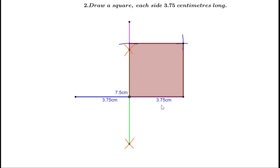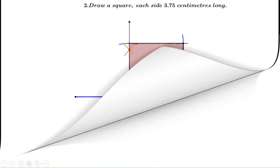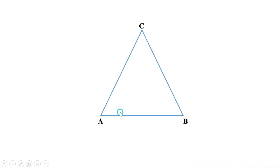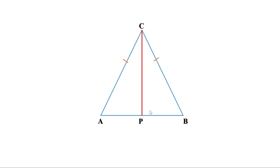In the last video, we saw how to draw the perpendicular bisector of a line. Today, we are going to learn how to draw the bisector of an angle. Consider the isosceles triangle ABC in which sides AC and BC are equal. The perpendicular bisector of AB is also the bisector of angle C. So, to draw the bisector of angle C, it is enough to draw the perpendicular bisector of the opposite side AB. To draw the bisector of any angle, we make an isosceles triangle where the angle joins the equal sides, then draw the perpendicular bisector of the opposite side.